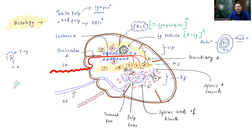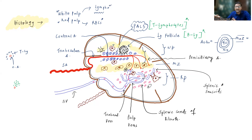Between the white pulp and red pulp, there is the marginal zone. This marginal zone will contain plenty of macrophages and dendritic cells. We will discuss more on the marginal zone in the next slide.